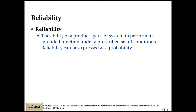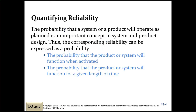You would hope it would function 100 percent of the time, but it might only function 99 percent of the time. To find the probability of failure, you subtract 0.99 from one, giving you a one percent chance of failure. So the security system is expected to fail one percent of the times it's being used. Engineers and designers use a number of techniques for determining reliability.